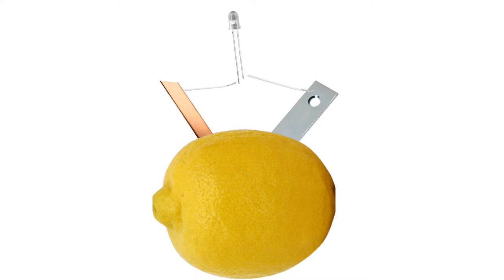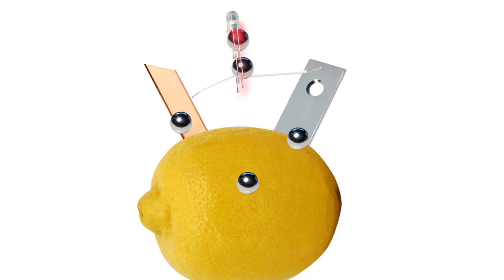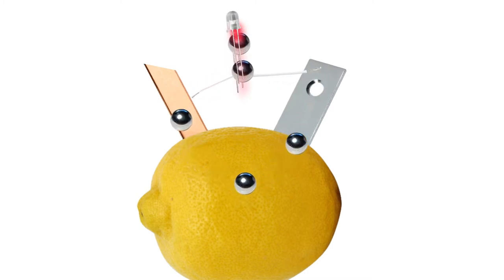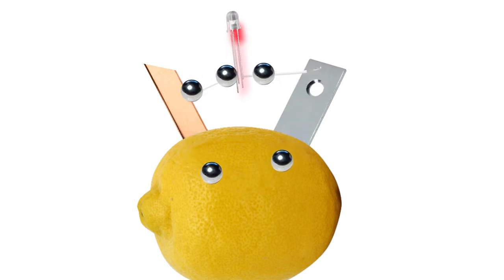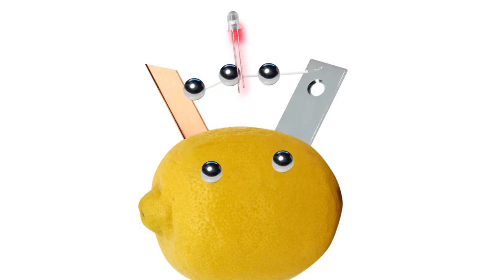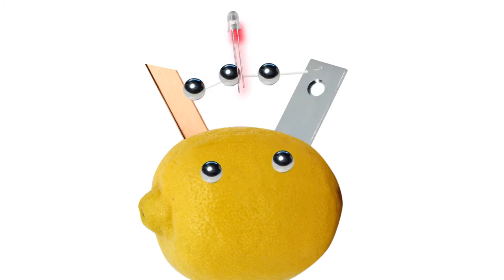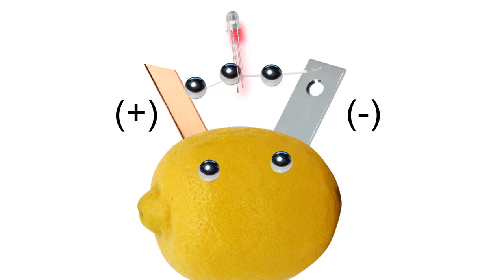When two electrodes, copper and zinc are suspended in the acidic lemon juice, the zinc plate sheds electrons as electrically charged ions into the acid. These electrons flow out of the wire through the LED and re-enter the lemon through the copper plate. The copper acts as a positive electrode and zinc acts as a negative electrode.